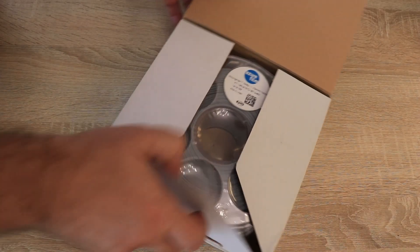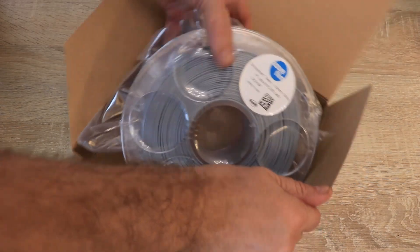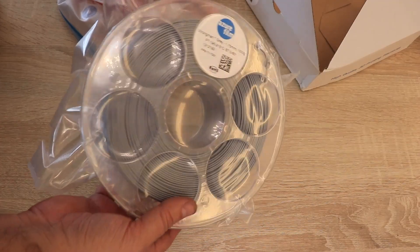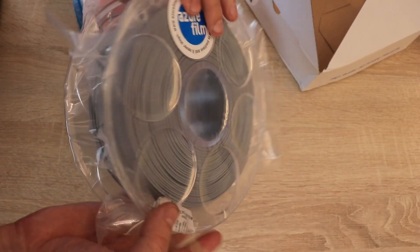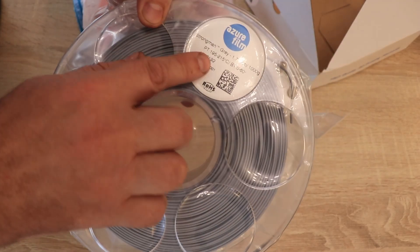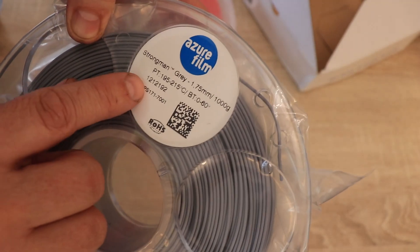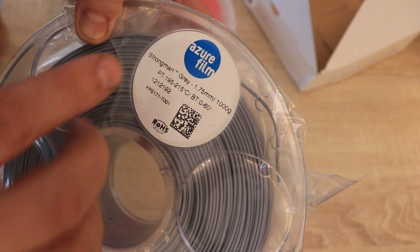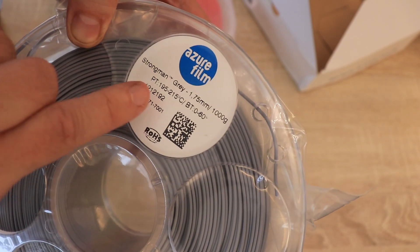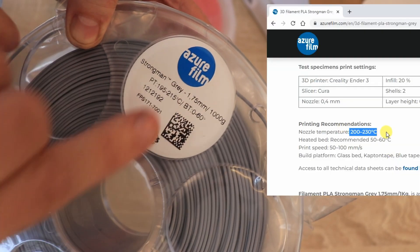Let's open the Strongman filament. It has a nice transparent spool like the regular PLA and is nicely packed in vacuum packaging. I can see basic information on the sticker: printing temperature between 195 and 215 degrees Celsius, which is confusing because their website says between 200 and 230 degrees Celsius.